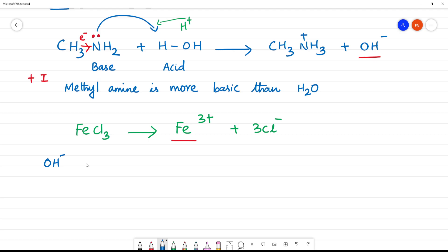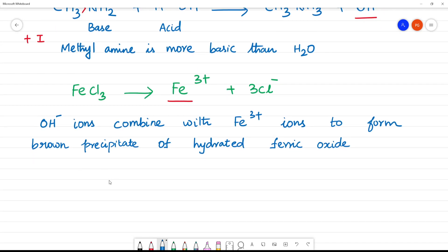First step is OH- ions combine with Fe3+ ions to form brown precipitate. Brown precipitate of hydrated ferric oxide. This one is the one.